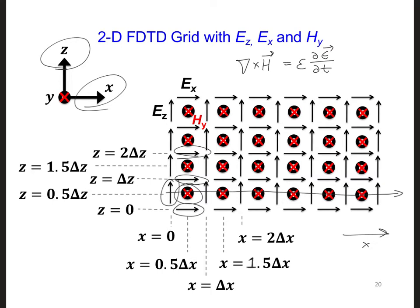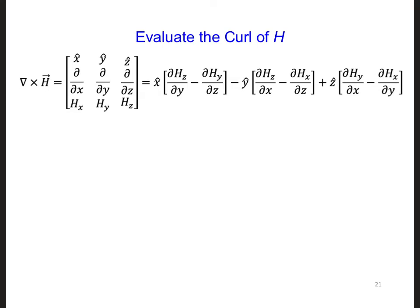We need to first evaluate the curl of H. Here I've written out the curl of H. The two-dimensional model that we have chosen only allows for field components to change in the x and the z directions, meaning that the wave can only propagate in the x and z directions.